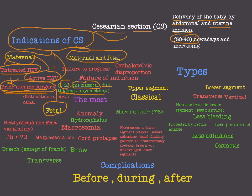Other maternal indications include untreated HIV, active herpes simplex virus, and obstruction in the birth canal. Sometimes we have conditions that obstruct the birth canal, like fibroids or any masses. Any obstruction is an indication for caesarean section. These maternal conditions can be remembered by logic: any obstruction, any infection, any prior surgery — because contractions during a subsequent vaginal delivery would predispose the uterus to rupture.